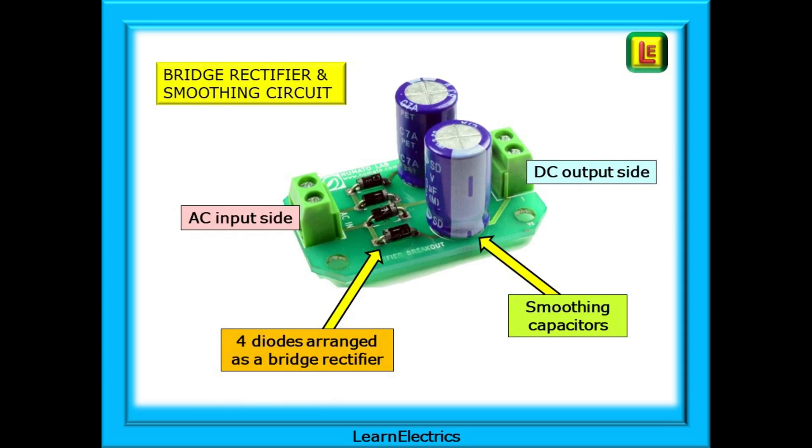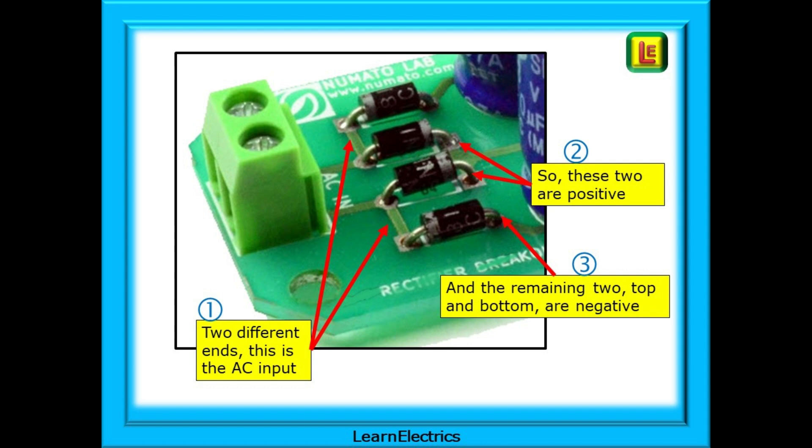This is a bridge rectifier module using four individual diodes. We can see the AC input terminals and the DC output side, and the very obvious smoothing capacitors. If we look closely at the diode arrangement, we can determine which are the AC input connections, and which are the DC connections.